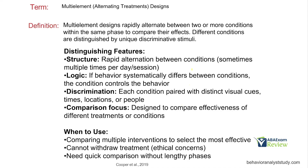Multi-element designs rapidly alternate between two or more conditions within the same phase to compare their effects. Different conditions are distinguished by unique discriminative stimuli. For example, with spelling words, you might have a game scenario, no game scenario, and game plus snack — each with distinct discriminative stimuli. We go ahead and alternate all of these conditions, connect the data points at the end, and we're looking for what condition is having the effect.